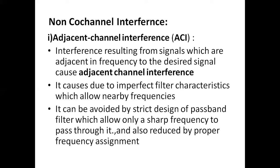The first type of non-co-channel interference is adjacent channel interference, or ACI in short form. Adjacent channel interference results from signals which are adjacent in frequency to the desired signal. Signals that are near or adjacent to the desired signal will cause interference, known as adjacent channel interference.